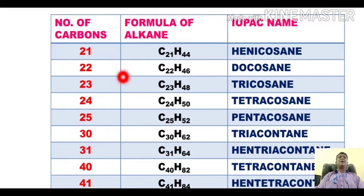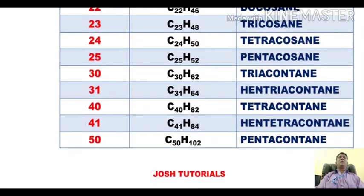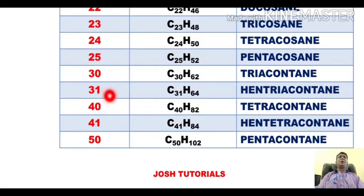So the alkane with twenty-one carbons is heneicosane, twenty-two is docosane, twenty-three is tricosane, twenty-four is tetracosane, twenty-five is pentacosane. Moving on to thirty carbons, it is triacontane, and the thirty-one carbon alkane is called hentrìacontane.